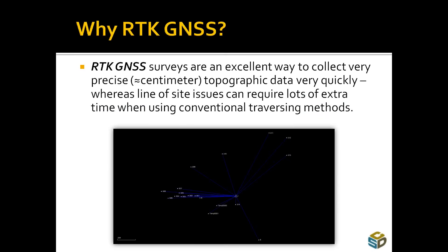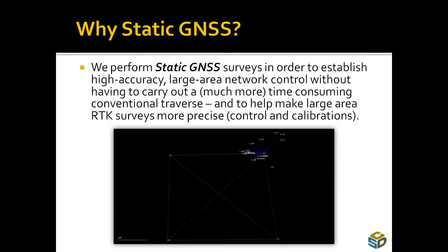A quick overview of GNSS data: the acronym GPS has evolved into GNSS, which comprises multiple constellations from different countries — the Global Navigation Satellite System. We collect RTK GNSS because it's a very efficient and precise way to collect quite a bit of topo data rapidly without having to use conventional traversing methods, which can be time consuming due to line-of-sight issues. Of course, we have to have a clear view to the sky in most cases to collect GNSS data, so obstruction could be one limitation.